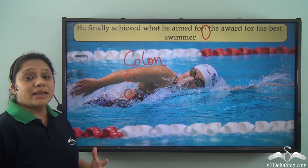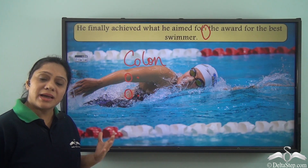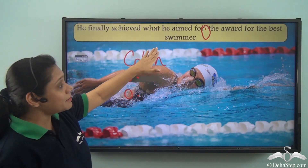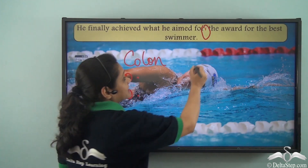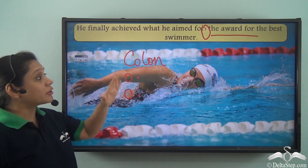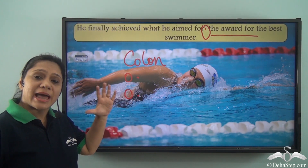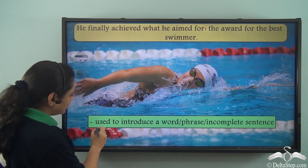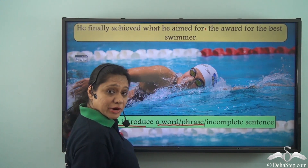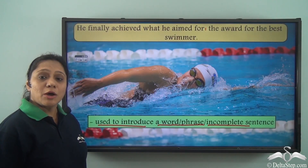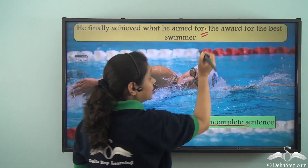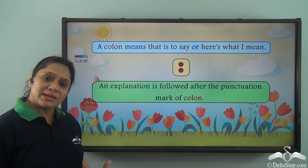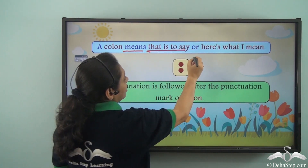The colon is helping us to separate the two ideas in a sentence. In this case, the second idea — the award for the best swimmer — is emphasizing or elaborating on the first idea. Hence the colon is helping us understand the sentence in an easier fashion. A colon is a punctuation mark that means 'that is to say' or 'here is what I mean.'